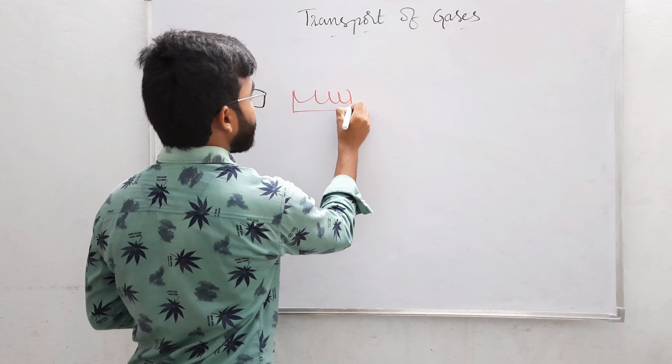When we see carbon dioxide, 70% of the carbon dioxide is transported from the tissues to the lung in the form of bicarbonates. And 20 to 25% of the carbon dioxide through RBC in the form of carbaminohemoglobin. The remaining 7% of the carbon dioxide through dissolved state in the plasma.